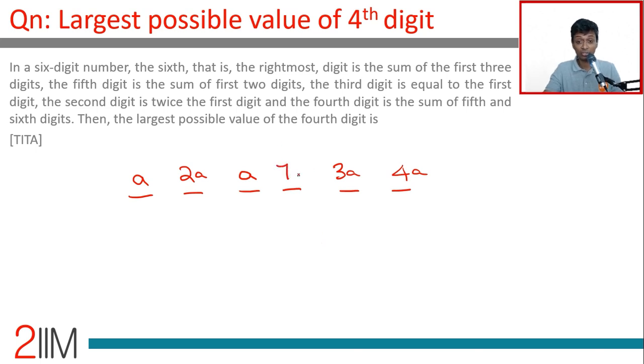The fourth digit is 7a. The largest possible value of the fourth digit is seven. It cannot be more than seven because digits cannot exceed nine.